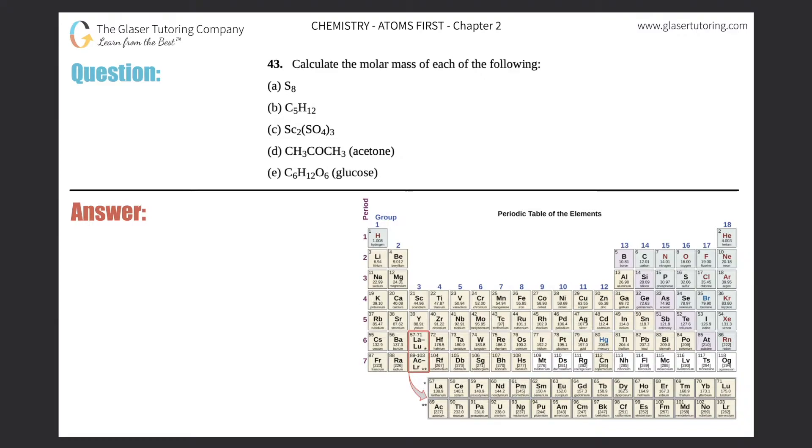Number 43, calculate the molar mass of each of the following. We got a through e and we definitely did a question just like this in number 42, the last question. So if you guys are new here and you are completely lost, which is totally fine, go back to number 42 first. I will go much more in depth than here. This one will be like the sped up version. The molar mass is always the sum of individual masses of the elements.